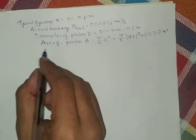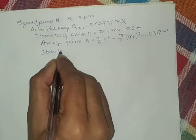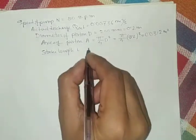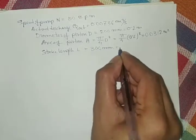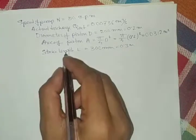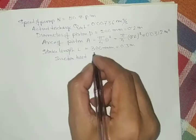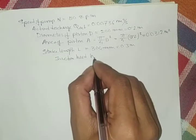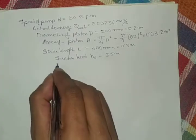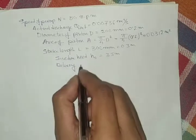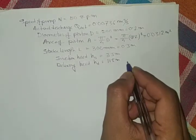Stroke length L is given as 300 mm, so 0.3 meter. Suction head, H_s, is 3.5 meter. Delivery head, H_d, is 11.5 meter. Those are the given data.